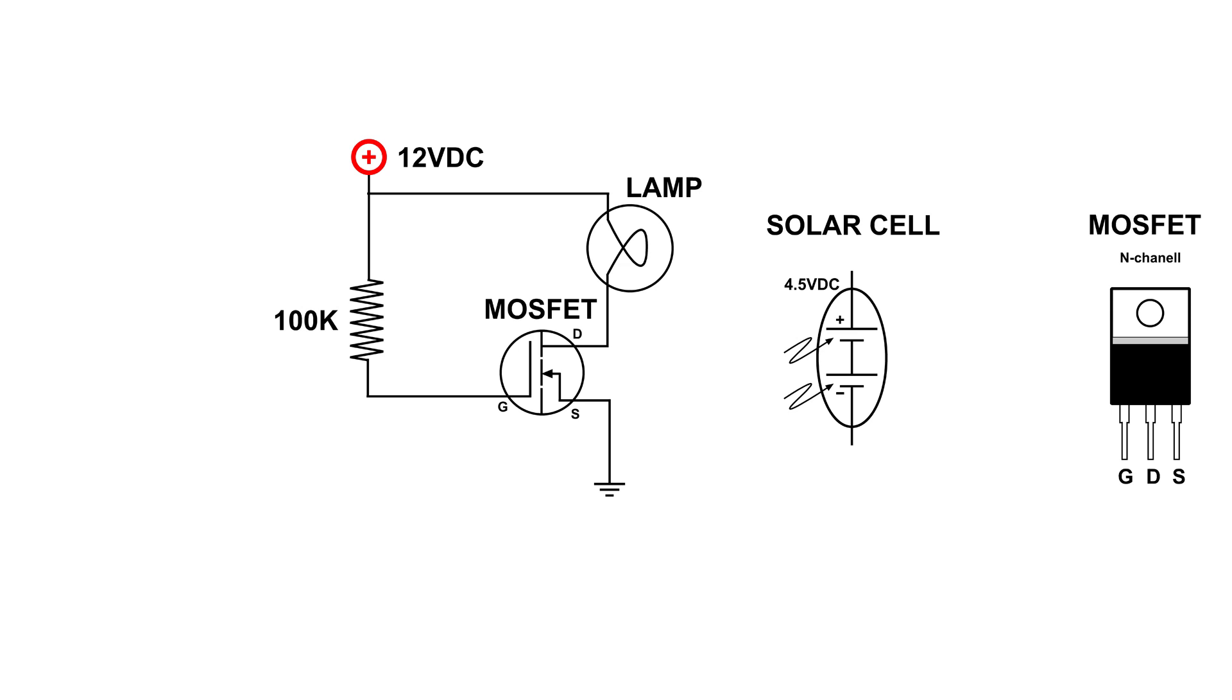The solar panel that I have produces 4.5 volts when a bright light hits the panel. When I was working up this circuit, I had to add another transistor to make the circuit work.